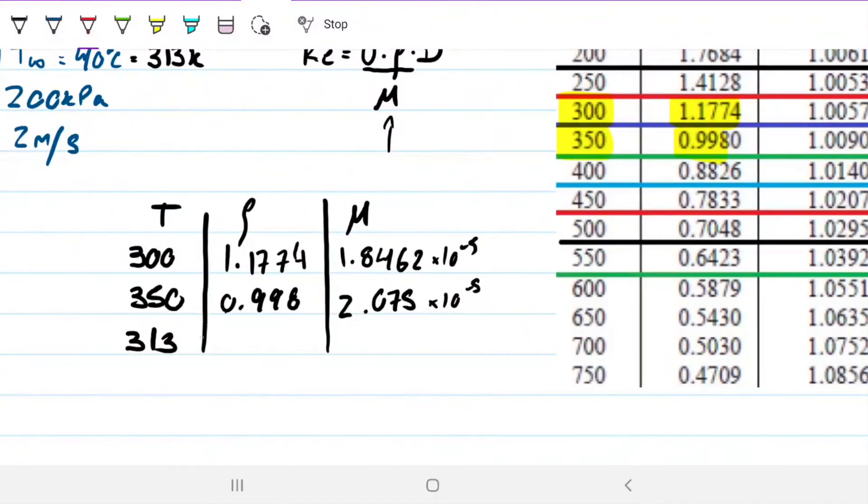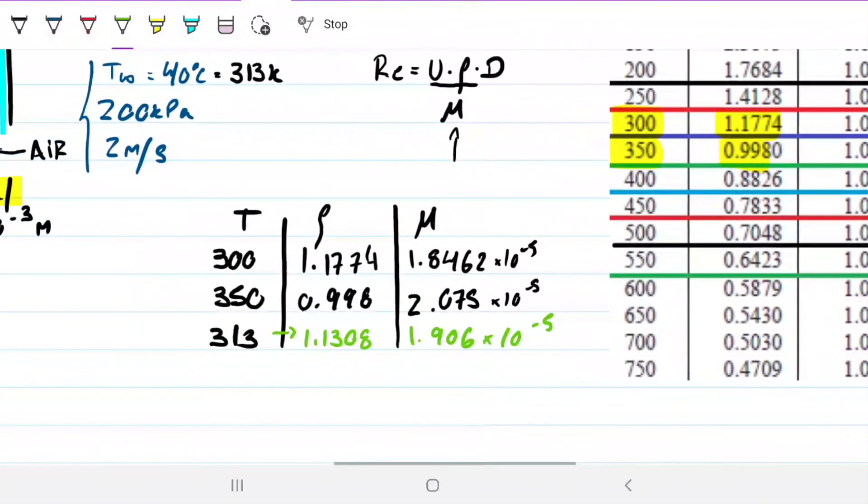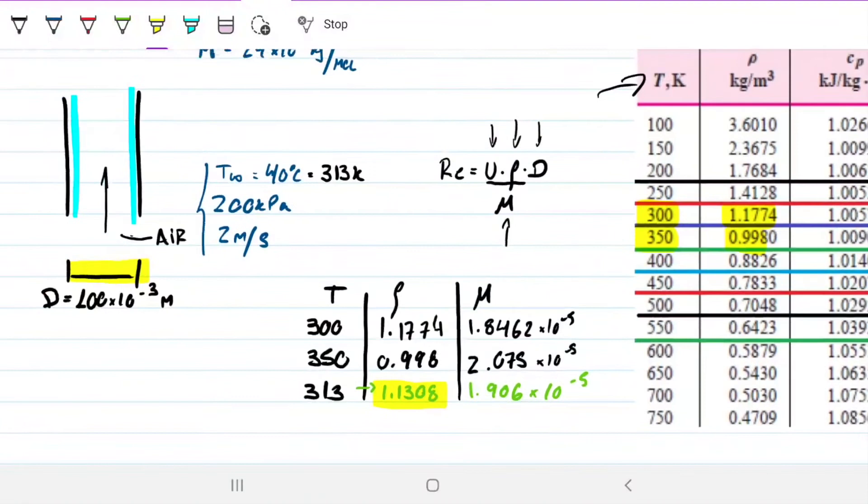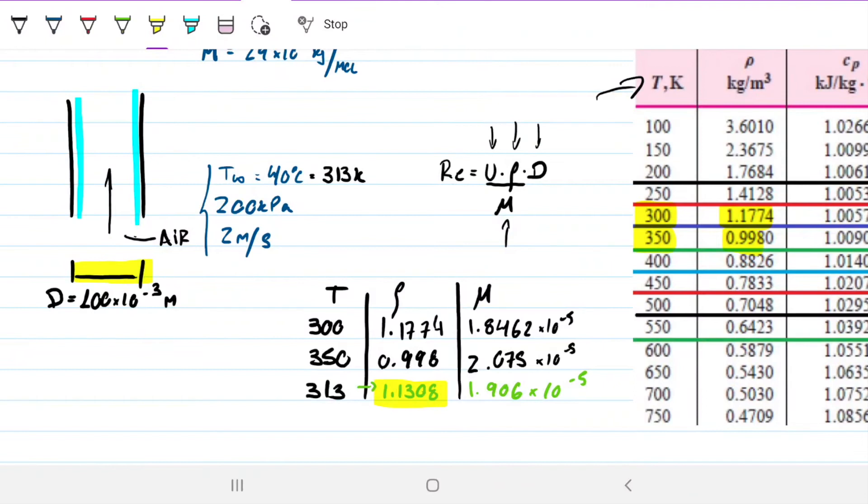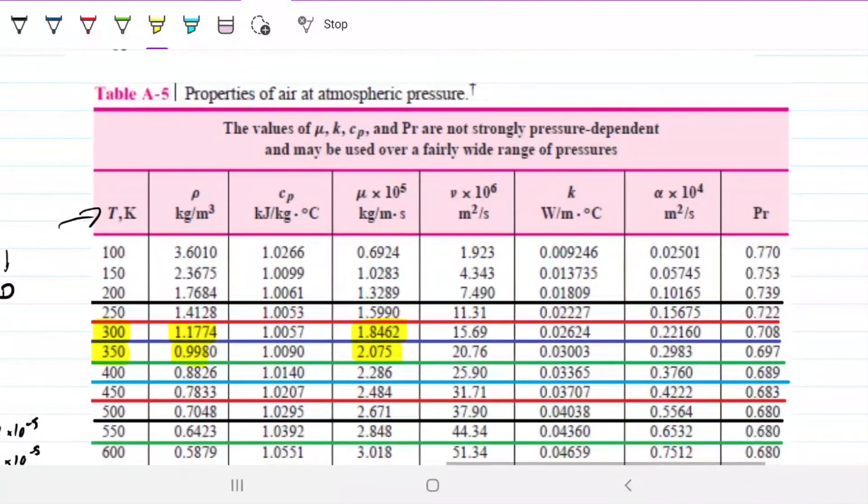I'm going to have my density here. It's going to be 1.1774. Here it's 0.998. Here my viscosity is 1.8462. And over here it's 2.075, all times 10 to the minus 5, what you see here. So now we can interpolate, do a linear interpolation to these values here. What I got was 1.1308, and here I got 1.906 times 10 to the minus 5.